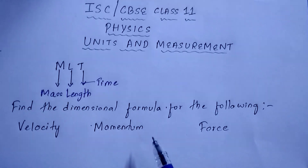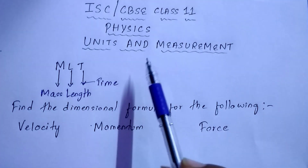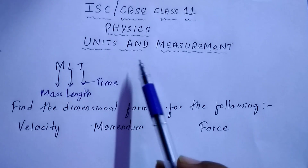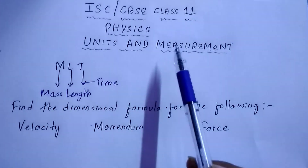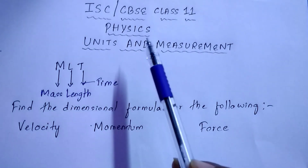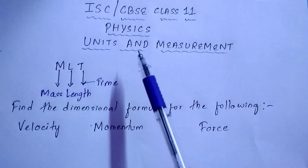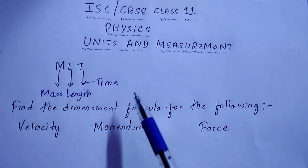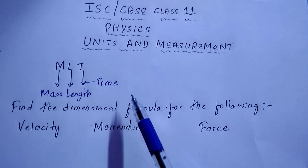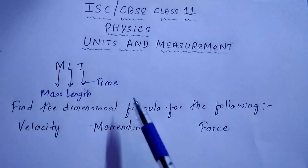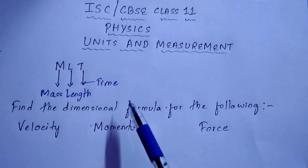...ISC as well as CBSE class 11 physics chapter number one. If you are in ISC it is chapter number one: Units and Measurement. If you are in CBSE, this is in your chapter number two: Units and Measurement. Today we are going to learn how to find the dimensional formula.